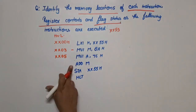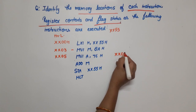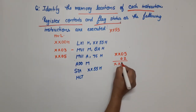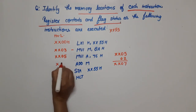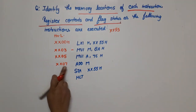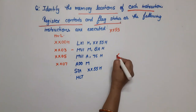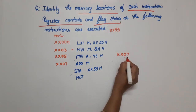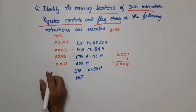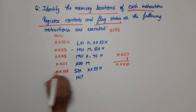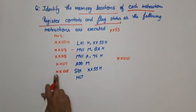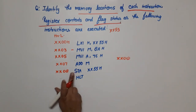The ADD instruction's location is XX05H, and since MVI is a two-byte instruction we add two, giving next location XX07H. ADD is a one-byte instruction, so its location is XX07H and the next location is XX07H + 01H = XX08H. STA address will be at XX08H. STA is a three-byte instruction.